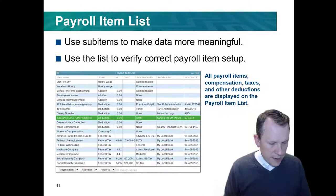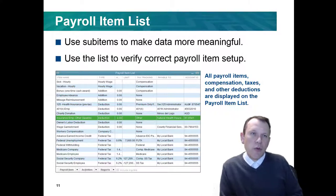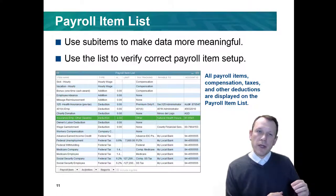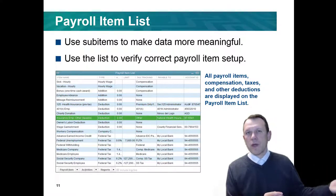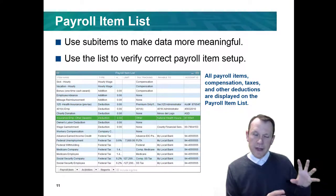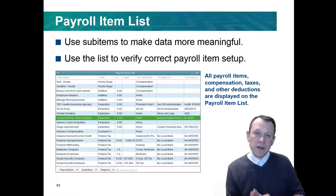We have a payroll item list, just like the other lists in QuickBooks. We can set up main items and sub-items to make things more meaningful — for example, federal taxes as a main item with the specific tax type as a sub-item. We use the list to verify correct payroll items are set up. All compensation, taxes, and other deductions are displayed on the payroll item list.